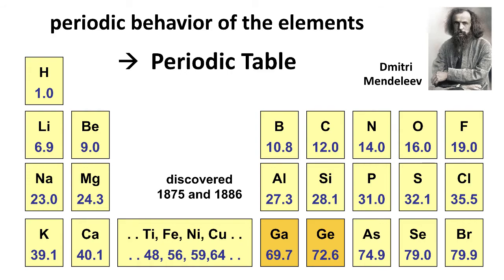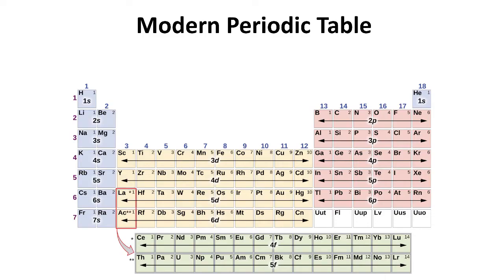Now of course Mendeleev's periodic table was pretty rudimentary. The modern periodic table is much more detailed, and we also know now the reason why the periodic table is the way it is, and it has to do with the arrangement of the electrons in energy levels and subshells, sublevels of atoms.